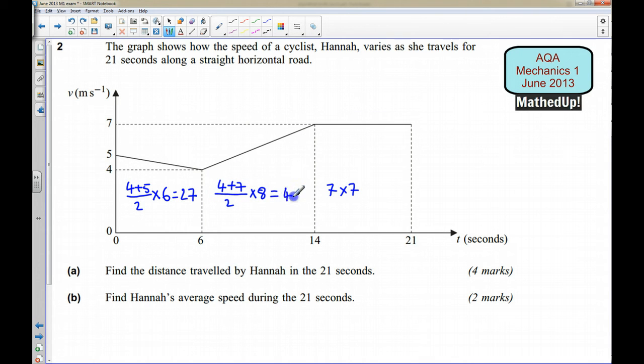And finally this one here it's going to be 49 so the distance travelled by Hannah in the 21 seconds I've got 27 plus 44 plus 49 and that gives me a total of 120 meters.